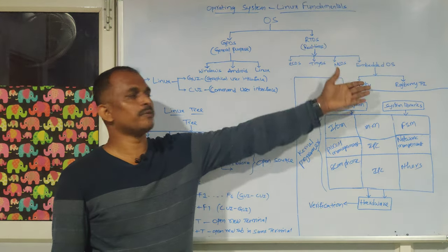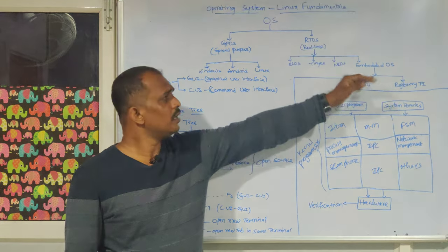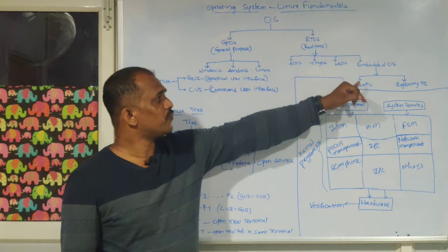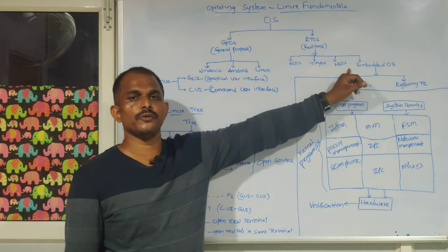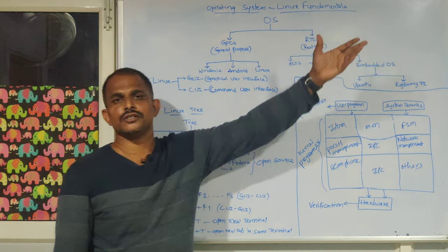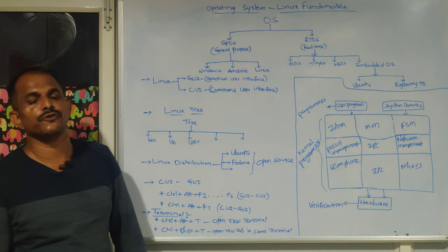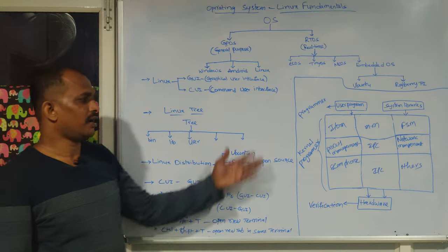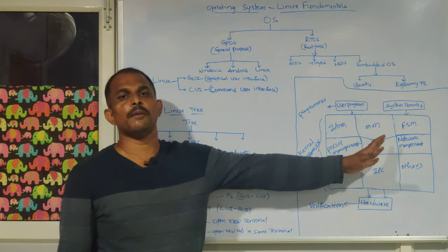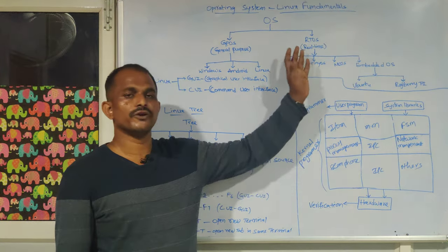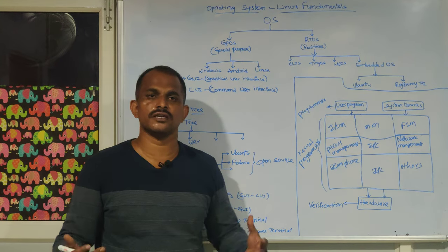For real-time operating systems, those available for application development in the embedded stream are mostly ECOS, TinyOS, and MuCOS. There are many operating systems you will find when working in embedded systems, and any such OS is minimized for application purposes from your regular kernel.